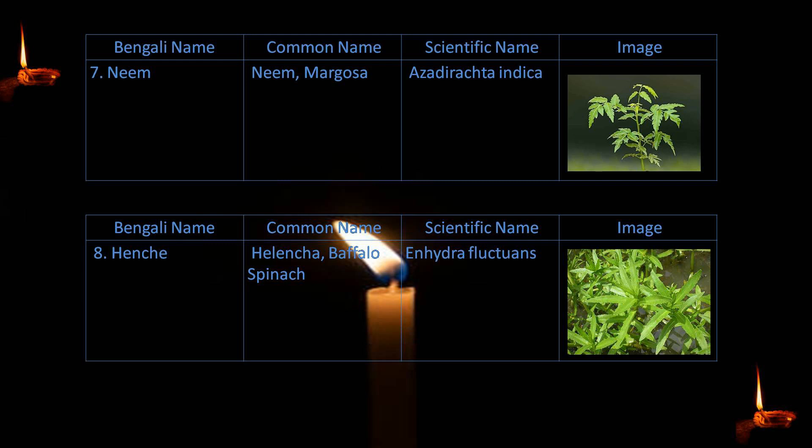7. Neem — margosa — Azadirachta indica. 8. Helentia or Hinche — buffalo spinach — Enhydra fluctuans.